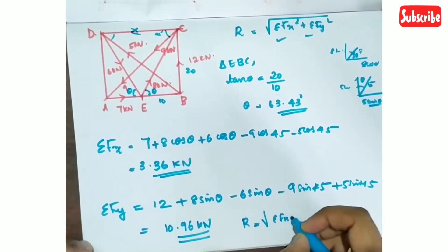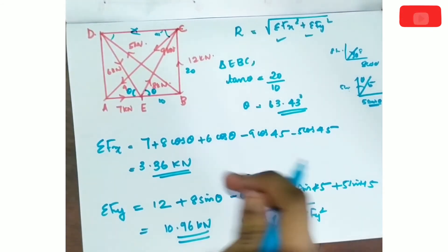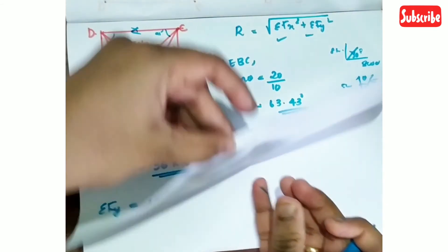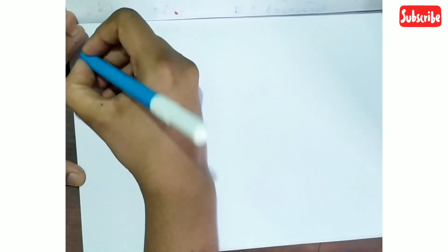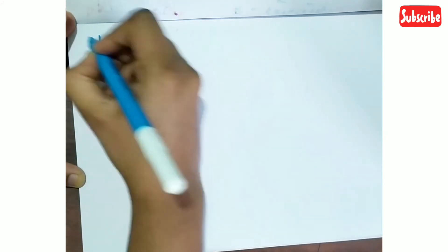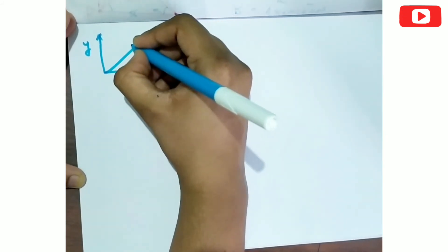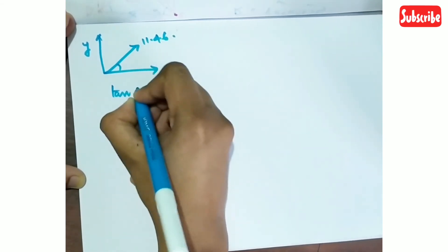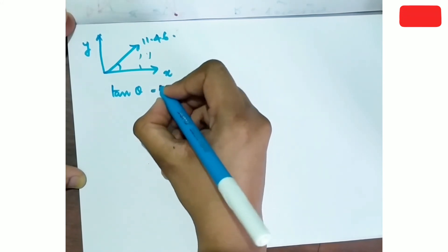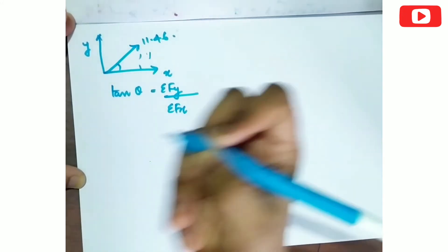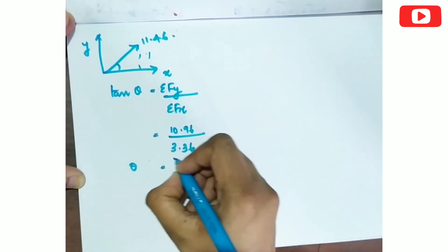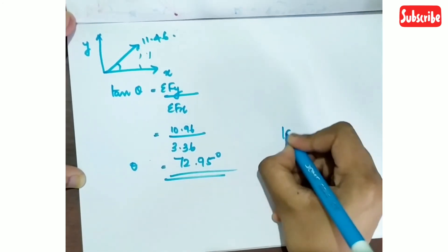Resultant R equals root of sigma Fx squared plus sigma Fy squared, which is root of 3.36 squared plus 10.96 squared, equals 11.46 kN. For inclination, tan theta equals sigma Fy by sigma Fx, so theta equals tan inverse of 10.96 divided by 3.36, giving theta equals 72.95 degrees. This gives you full 10 marks.